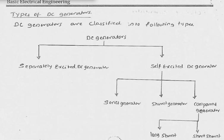We have two machines in a DC machine: one is called a DC generator and another one is a DC motor. A DC generator is the electrical machine which converts mechanical energy into DC electrical energy. DC generator works on Faraday's first law of electromagnetic induction — that is, whenever flux linked with a coil or a conductor changes, an EMF is induced in that particular coil or conductor.